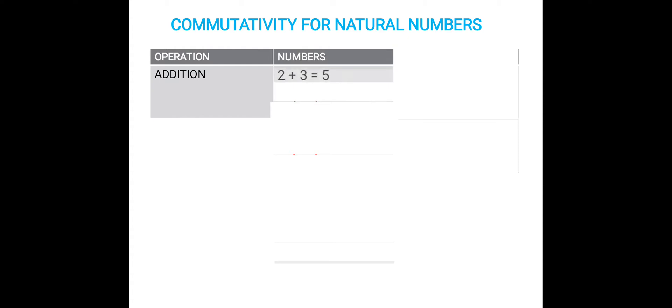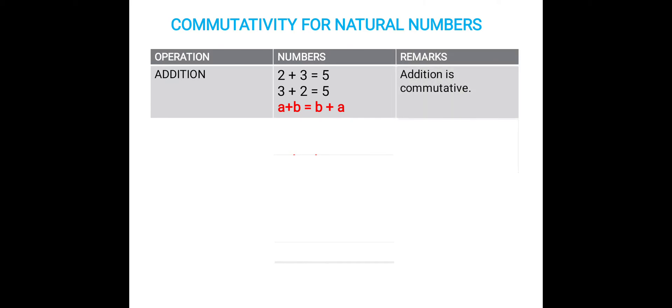Similarly, let us now check the commutative property for natural numbers. Under addition, let's add any two natural numbers. 2 plus 3 equals 5. Let's change the order now. 3 plus 2 also equals 5. So the order of the numbers does not matter for addition — we get the same answer. Therefore, a plus b equals b plus a, and addition is commutative.